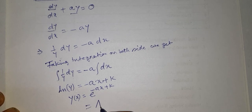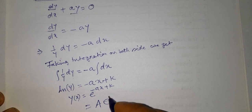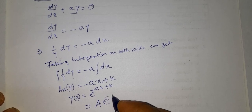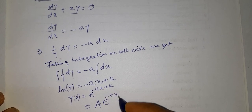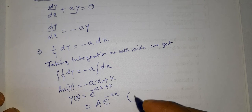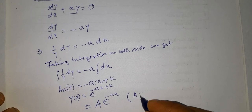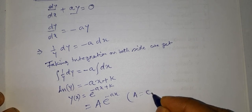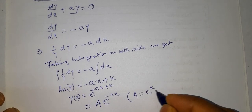That is equal to A·e^(-ax), where we write A = e^k.